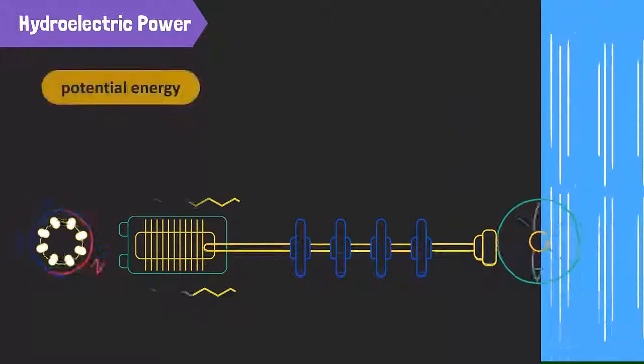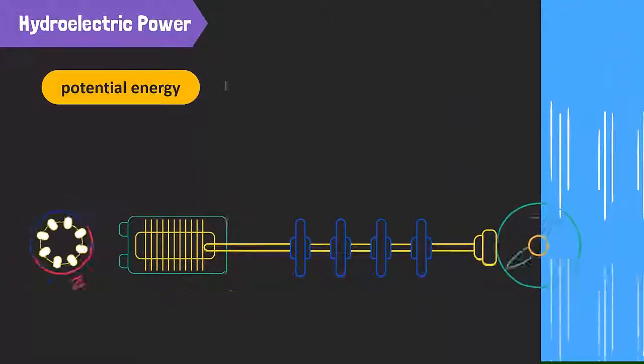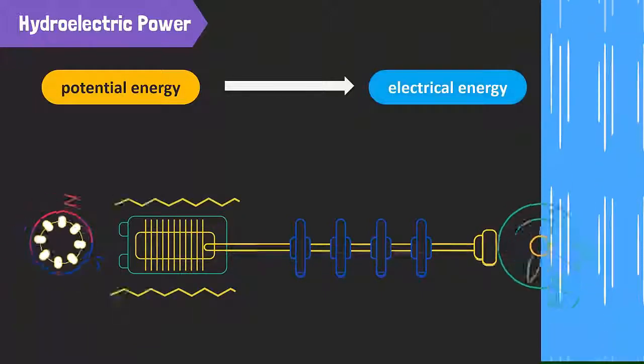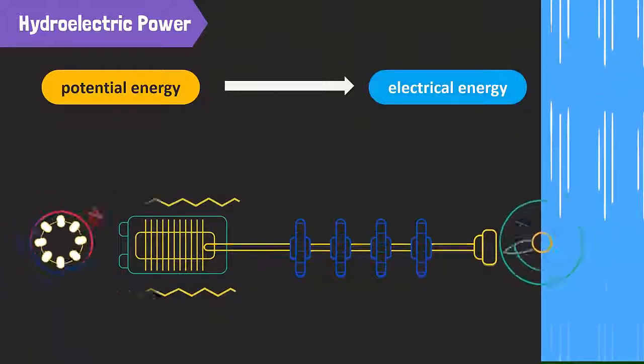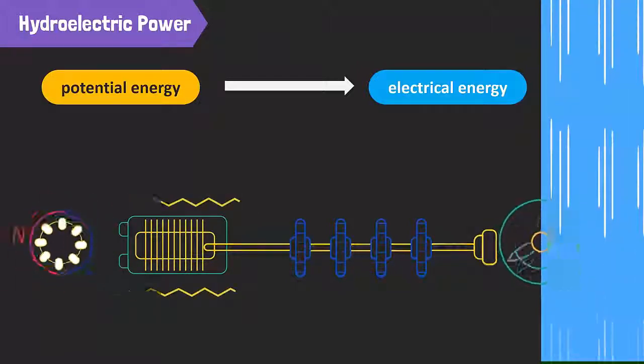Therefore, potential energy in the water is converted to electrical energy in the generator. Turbines like these are called water turbines, since they rely on water to work.